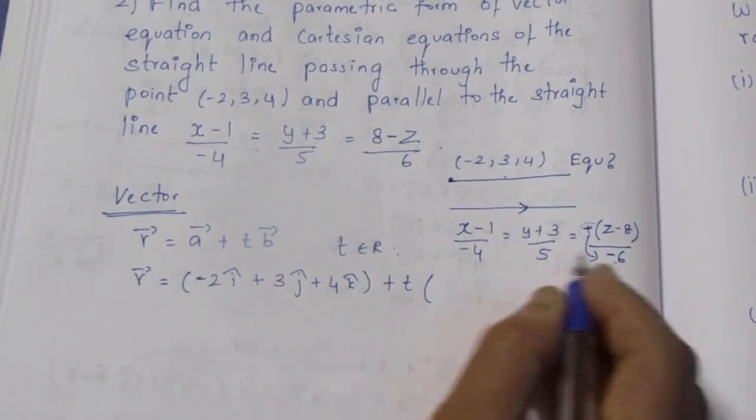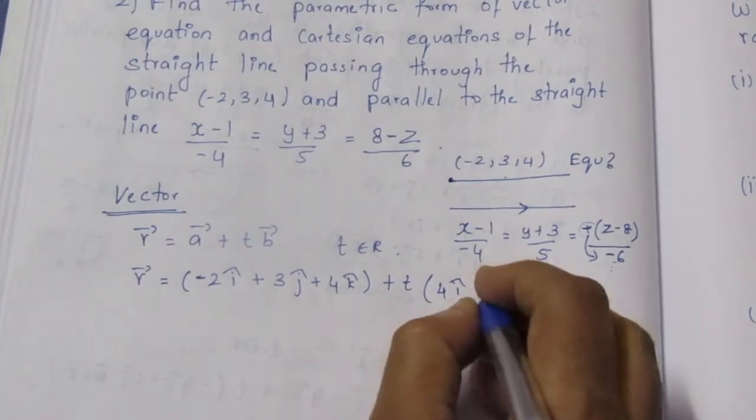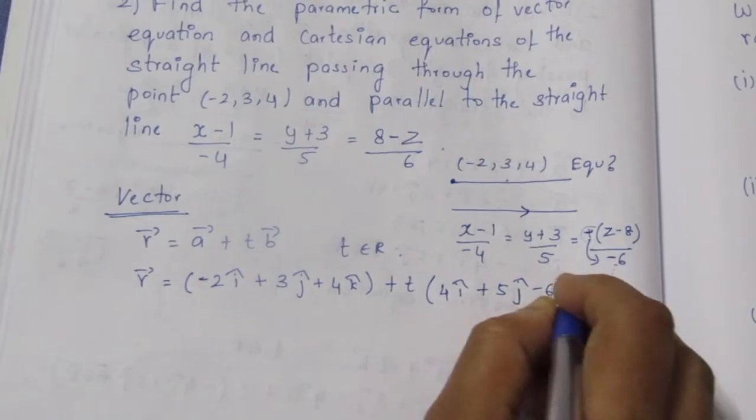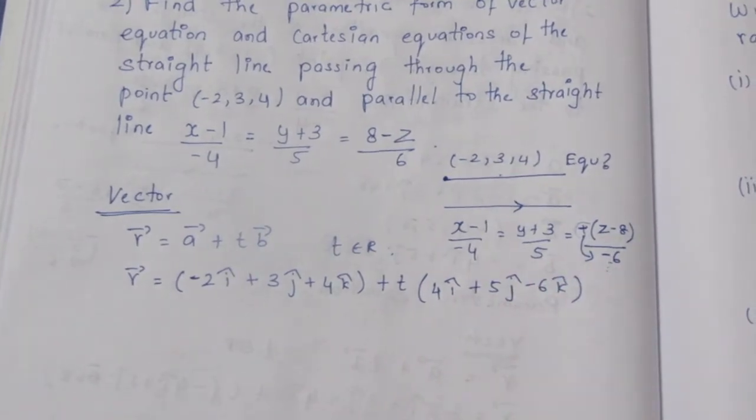B vector is the direction. So, minus 4 i-cap plus 5 j-cap minus 6 k-cap. This is the vector form.